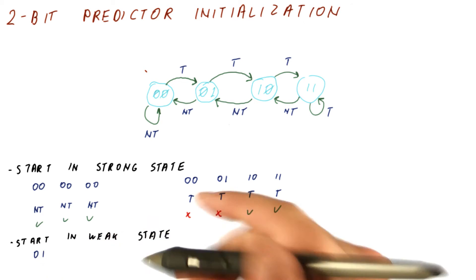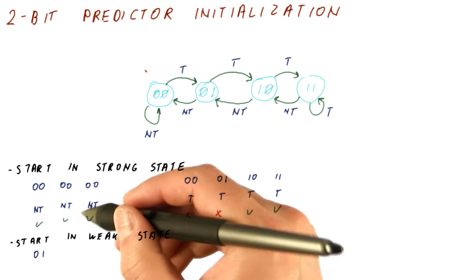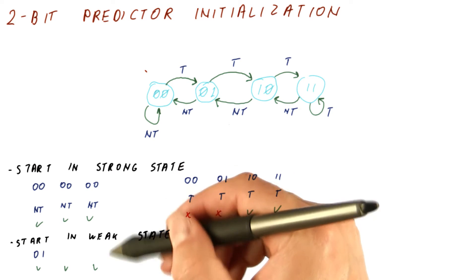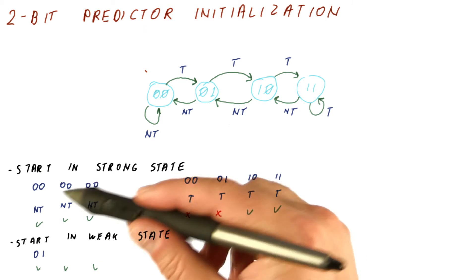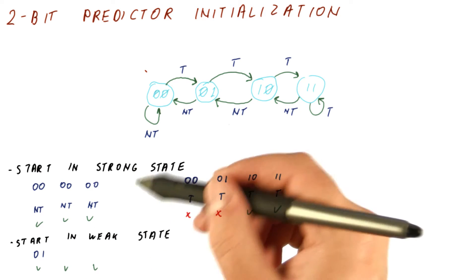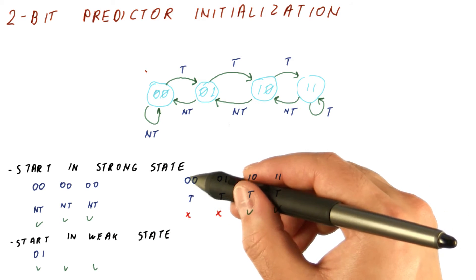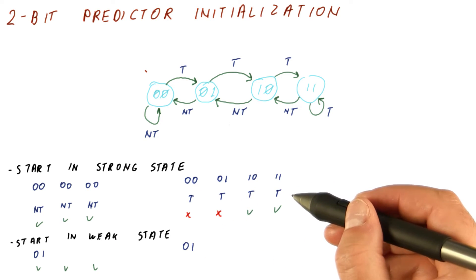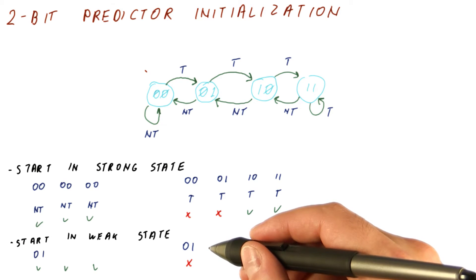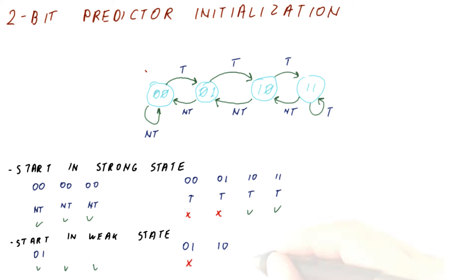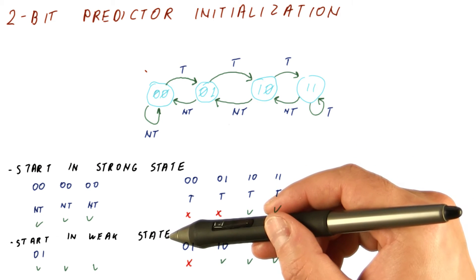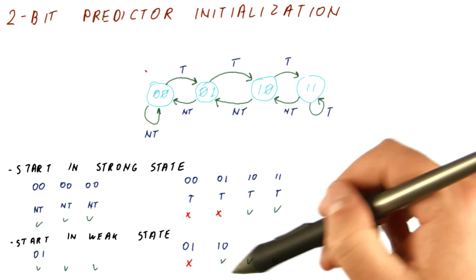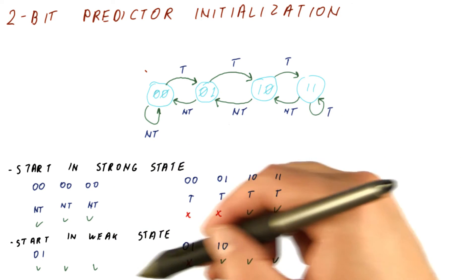If we start in a weak state, such as zero-one, and we started in the correct weak state, we will just move to the strong state and still have all correct predictions. So in the case when we guessed right about what should be the dominant behavior in the starting state, we have perfect prediction regardless of whether we start in the strong or weak state. However, if we were wrong about where to start and we start in, let's say, zero-one, but the branch is mostly taken, we will have one misprediction, then move to the weak taken state, and start having correct predictions from then on. So if we start in a weak state, we don't lose anything if we were right, but we gain one less misprediction if we were wrong about what should be the bias.